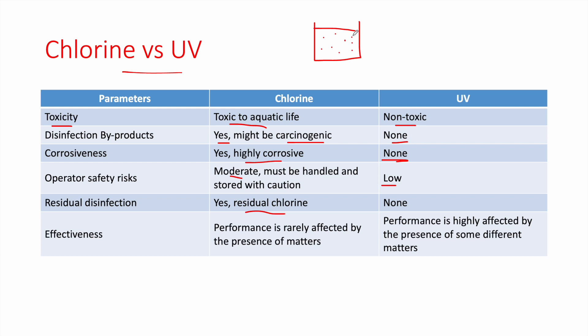Residual chlorination can be beneficial if you want to store the treated wastewater, as it inhibits reproduction of pathogens. UV has no residual that stays in the water. Concerning effectiveness, chlorine is rarely affected by the presence of matter, so whatever the condition of the wastewater entering the chlorination tank, chlorine is mostly always highly effective when added at the appropriate dosage. UV, however, is highly affected by the presence of certain constituents.